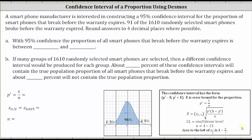This lesson will show how to use Desmos.com to construct a confidence interval of a proportion. A smartphone manufacturer is interested in constructing a 95% confidence interval for the proportion of smartphones that break before the warranty expires. 91 of the 1,610 randomly selected smartphones broke before the warranty expired. Round answers to four decimal places where possible.